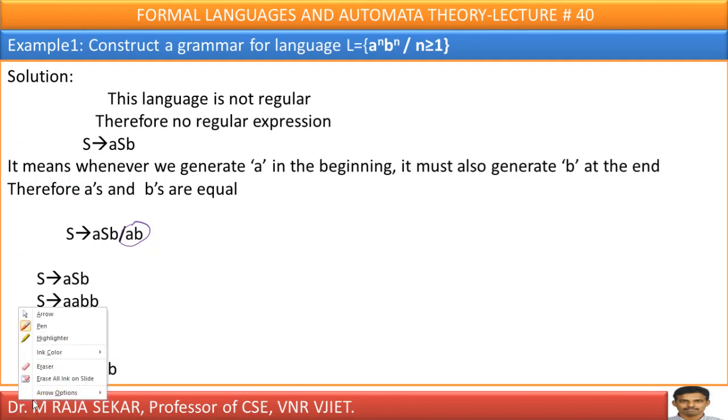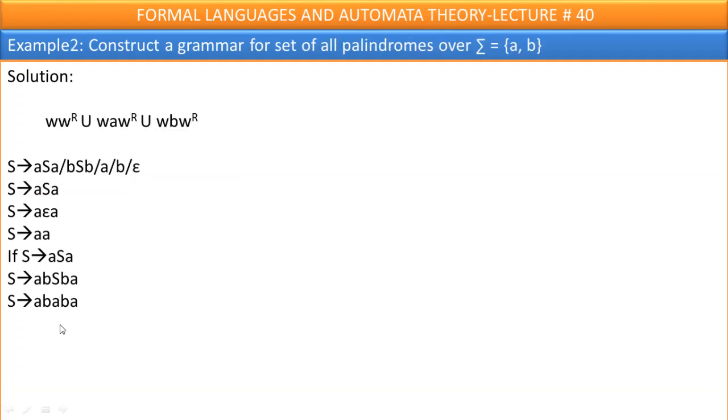This is simple and straightforward. Anyone can understand. Example two. Construct a grammar for set of all palindromes over sigma equal to a, b.